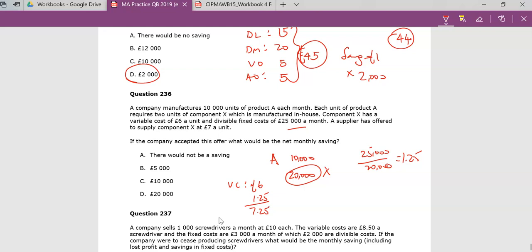And currently supplier has offered to sell it for you to buy this externally at 7 pounds. And if you compare these two, that's 25p saving. So yes, go for it. So that's 25p across all the 20,000 components. So 25p times 20,000 takes you nicely into 5,000. So that's the answer, B, for that one.